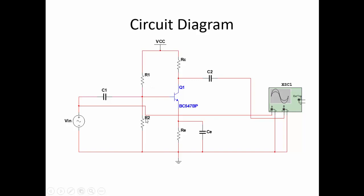Resistors R1 and R2 are for biasing based on the voltage divider biasing network. RC is the collector resistance as the load, and RE is the emitter resistance for stability of the Q point or operating point. CE is the emitter bypass capacitor connected in parallel to improve the gain of the circuit and bypass unwanted AC signals to ground.